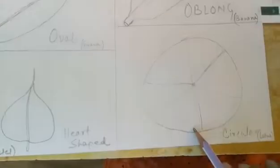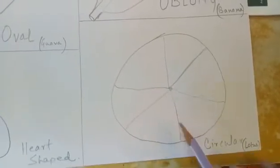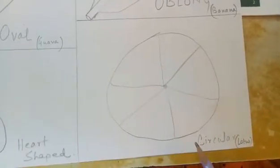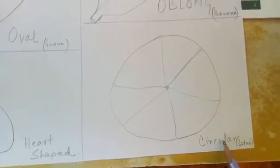Next one is circular. The shape of the leaf is like a circle. That's why it's circular. Example is lotus.